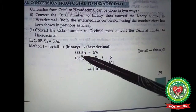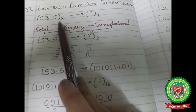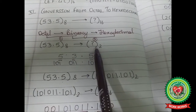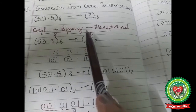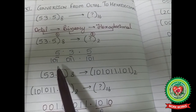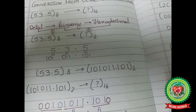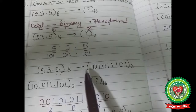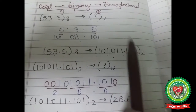Here we are going to convert 53.5 (an octal number) to hexadecimal. First, convert the octal number to binary by writing the binary equivalent of each single digit. The binary equivalent of 5 is 101, of 3 is 011, and of 5 is 101. So the binary equivalent of 53.5 is 101011.101.